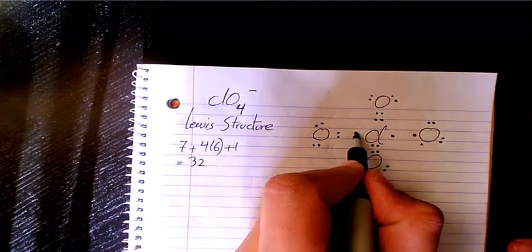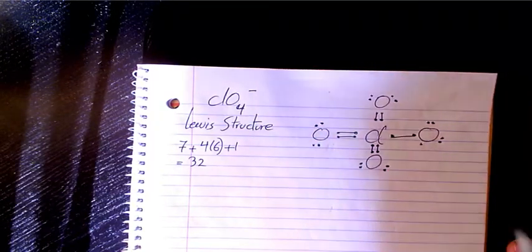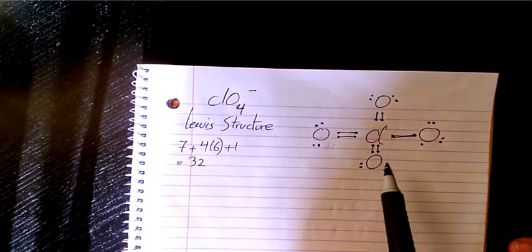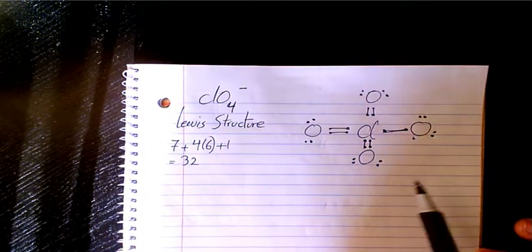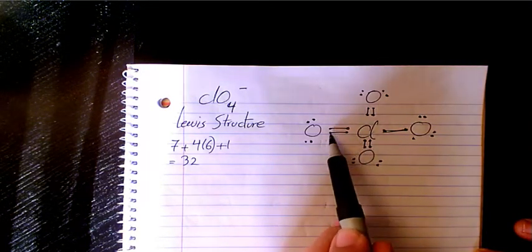Then we have the double bond there, here and here, and here we have single bonds. So as you see here chlorine is overfilling, so it doesn't obey the octet rule. So we have two, four, six, eight, ten, twelve, and fourteen.